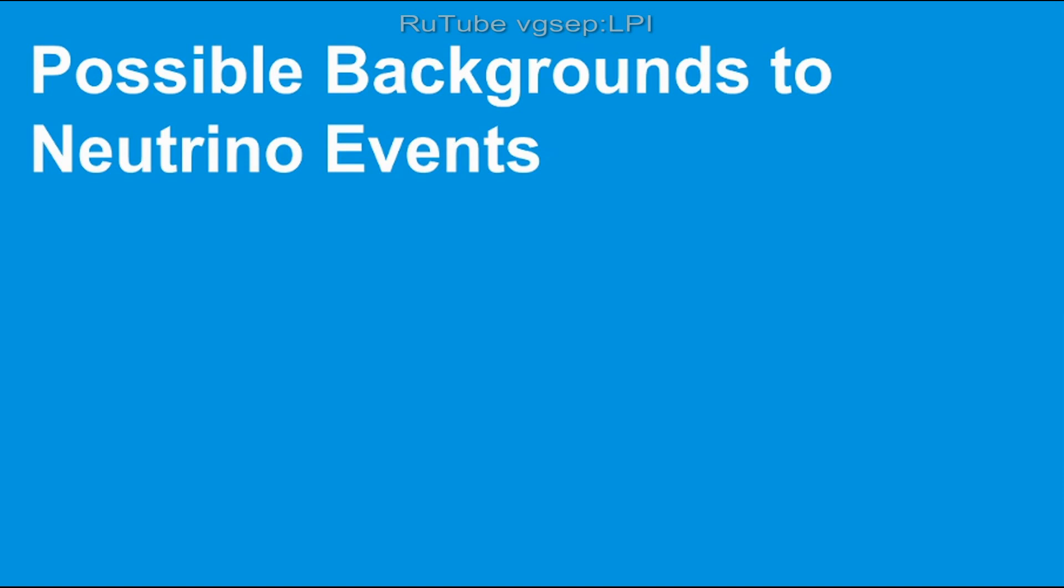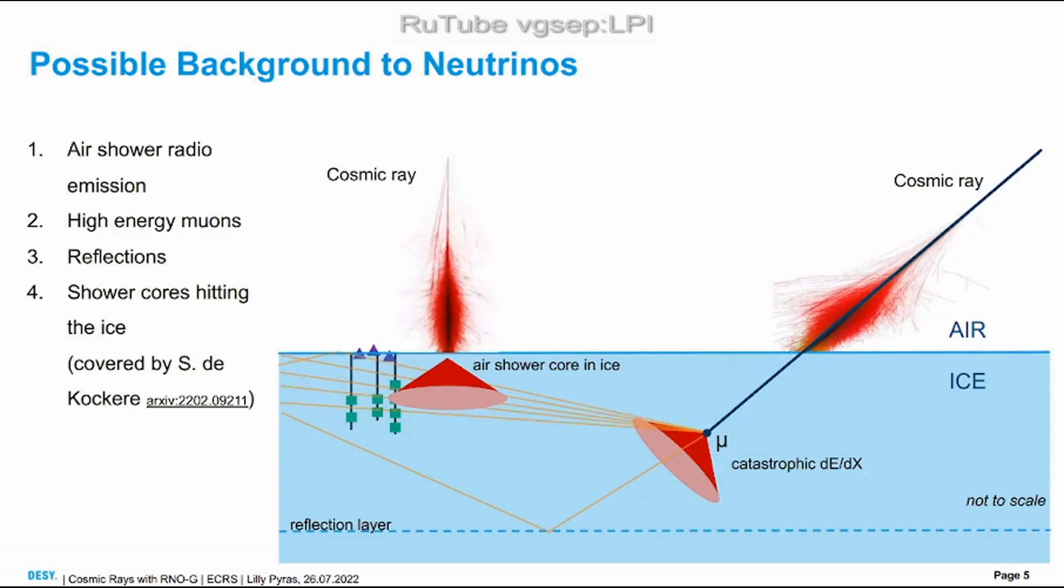Now to the possible background events to neutrinos. I made this little plot where we have here the air-ice interface and of course we can have cosmic rays and air showers which then travel to a detector here and can be measured by the surface antennas.